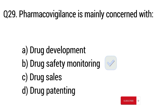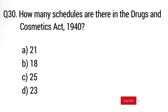Question number 30. How many schedules are there in the Drugs and Cosmetics Act? The right answer is option D: 23.